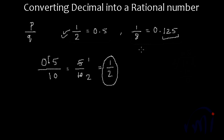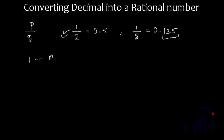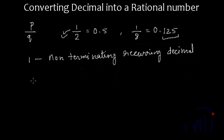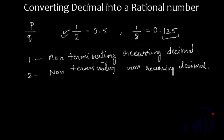But if you have an infinite number of decimal digits, then there arise two varieties. One is non-terminating but recurring decimal, and the second variety is non-terminating, non-recurring decimal. So in non-terminating decimals, we have two varieties: recurring and non-recurring.